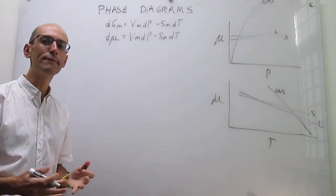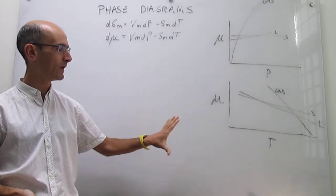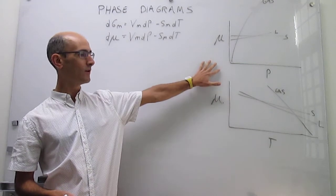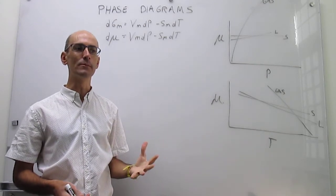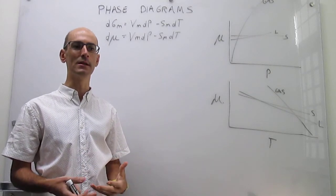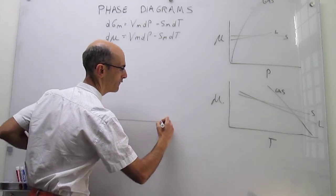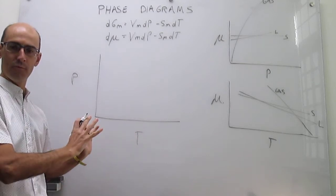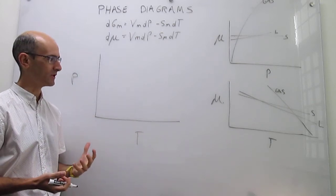So what is a phase diagram? A phase diagram is the culmination of all of this work. Notice that we have studied separately the stability of phases with temperature and the stability of phases with pressure. A phase diagram is simply a way to study the pressure and temperature dependence of phase stability at the same time. It is simply a map of pressure versus temperature in which we display the most stable phase.